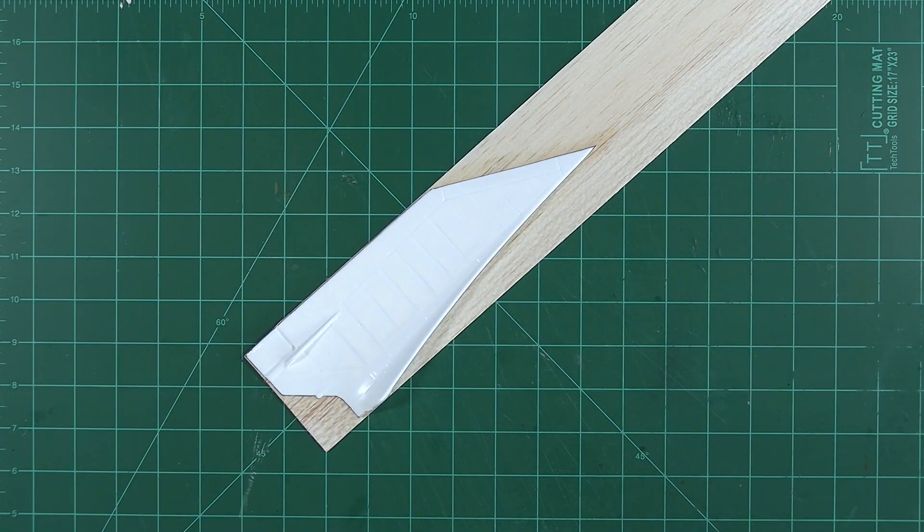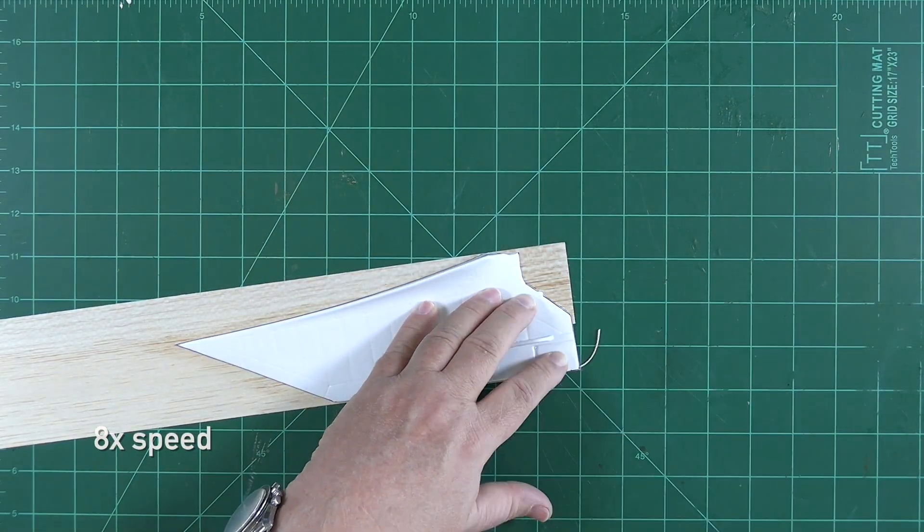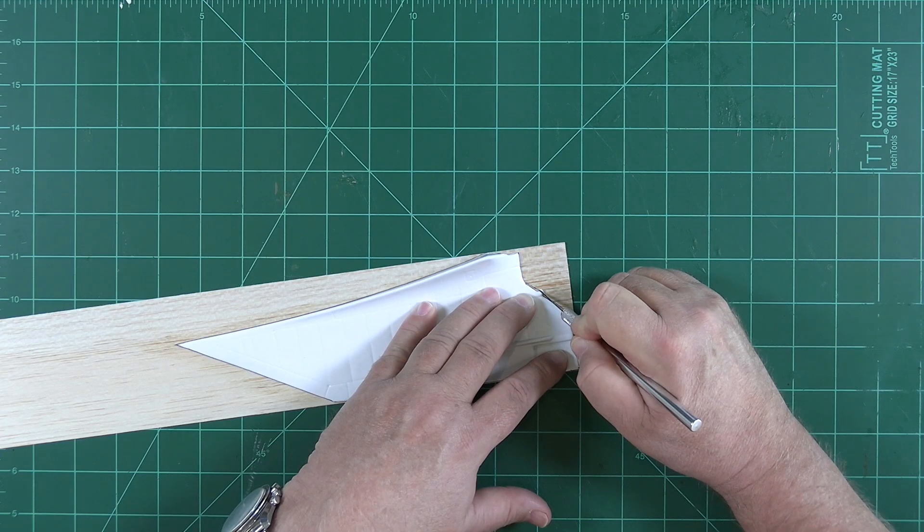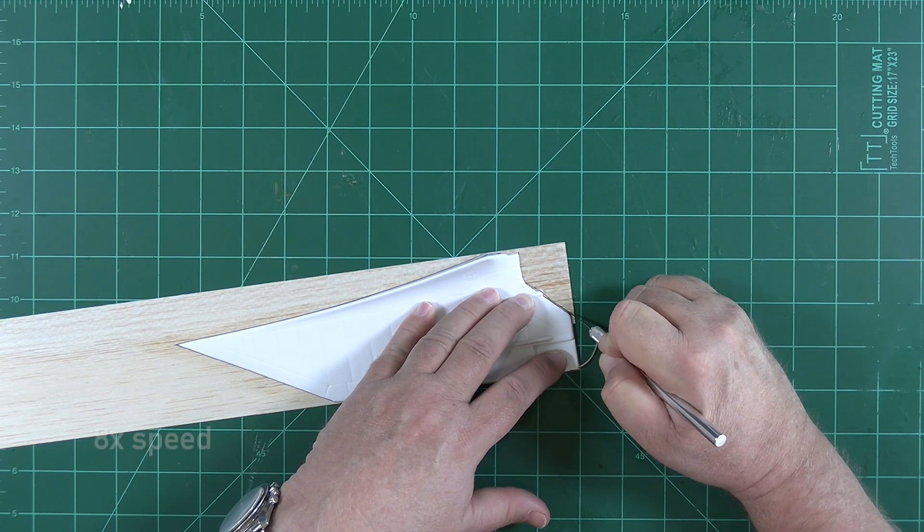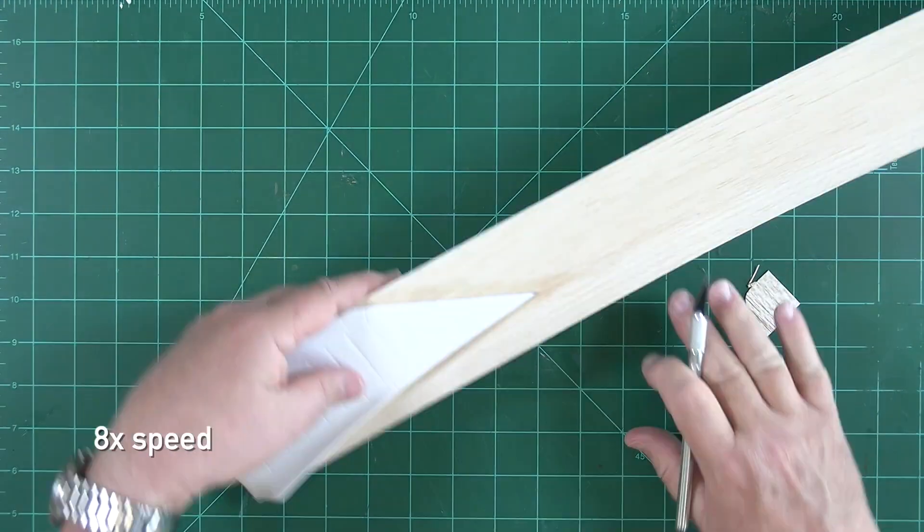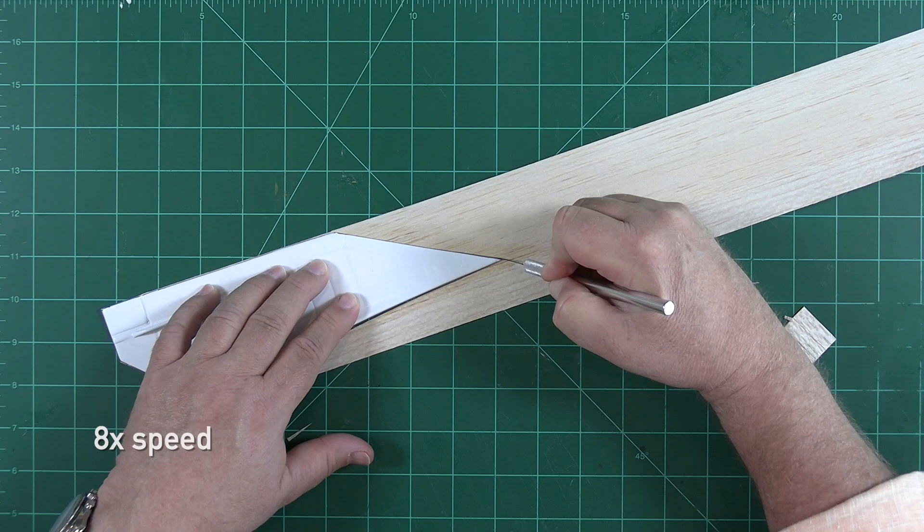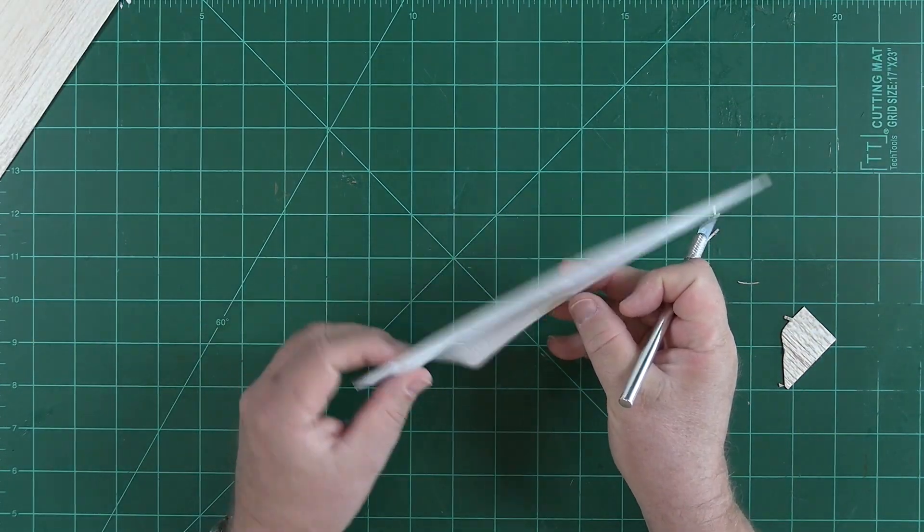And there, we're ready to cut out the part. We can cut straight through this antenna mount. And our first fin half is free.